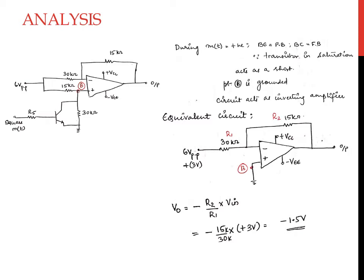If the input voltage is minus 3 volts, then the output voltage obtained in this case will be plus 1.5 volts.